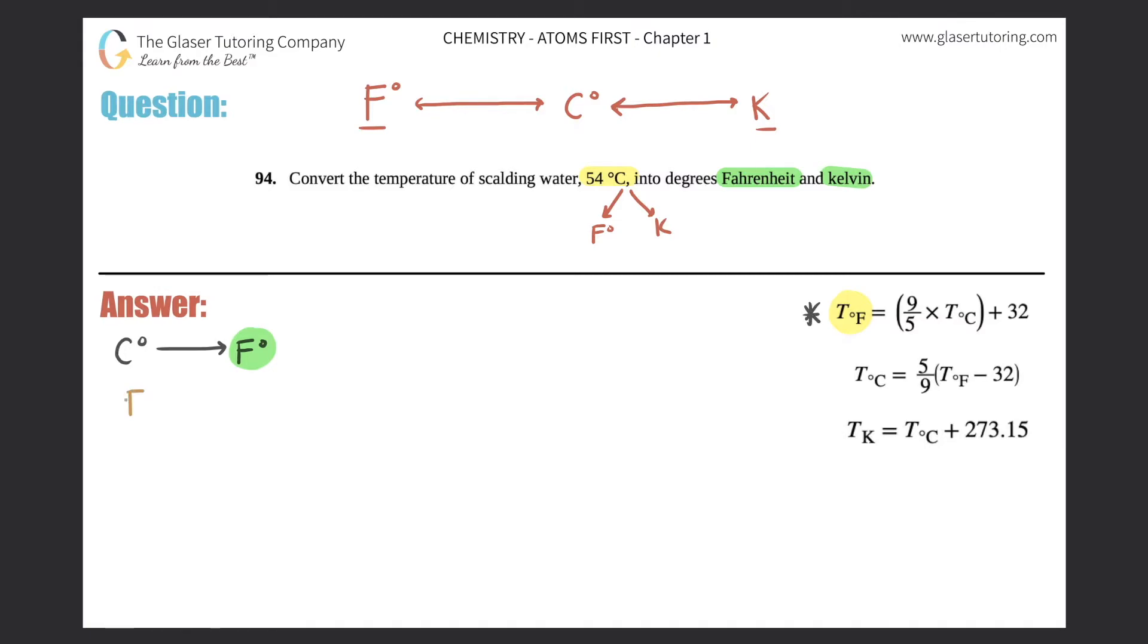So I'm going to just say Fahrenheit equals 9 over 5 times my Celsius temperature plus 32. Now you guys should know your PEMDAS by now. Just know that this part is always number one, and then you would add second, because multiplication comes first, then addition and subtraction.